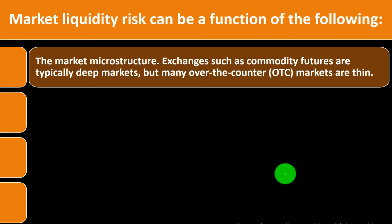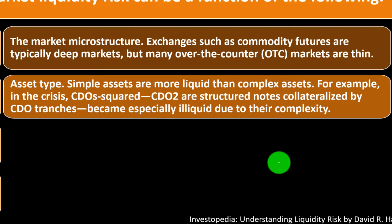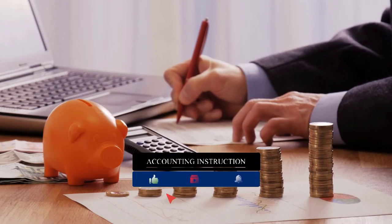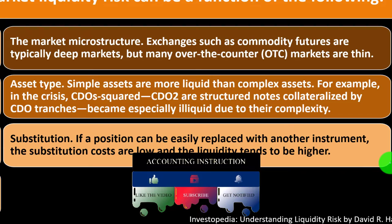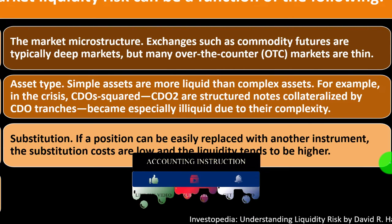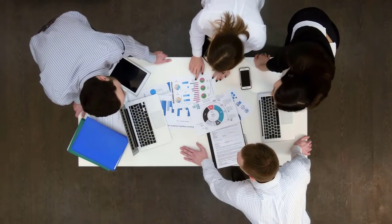Market liquidity risk can be a function of several factors. Market microstructure: exchanges such as commodity futures are typically deep markets, but many over-the-counter OTC markets are thin. Asset type: simple assets are more liquid than complex assets. For example, in the financial crisis, CDOs squared — CDO² — structured notes collateralized by CDO tranches became especially illiquid due to their complexity. A more complex investment strategy can make it more difficult to exit in the future. Substitution: if a position can be easily replaced with another instrument, substitution costs are low and liquidity tends to be higher.